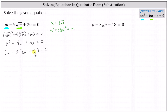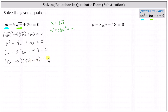This gives us a factor of u minus five and a factor of u minus four. Because we are solving for m, not u, let's perform a substitution and replace u with the square root of m. This gives us a factor of the square root of m minus five and a factor of the square root of m minus four. If this product must equal zero, then the square root of m minus five must equal zero, or the square root of m minus four must equal zero.